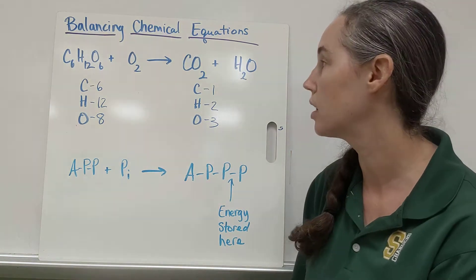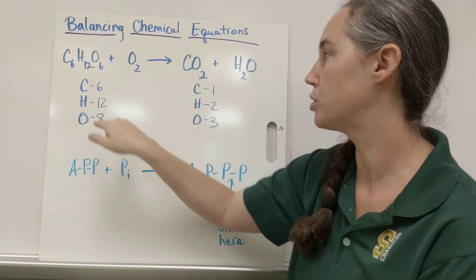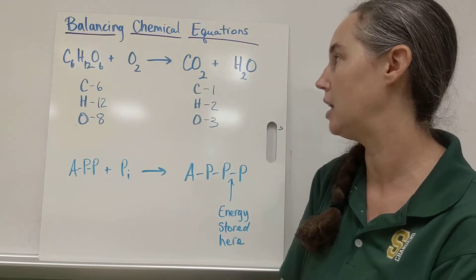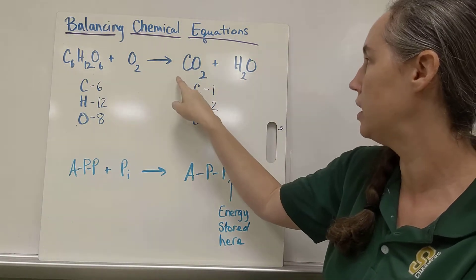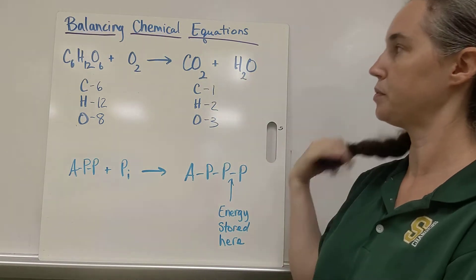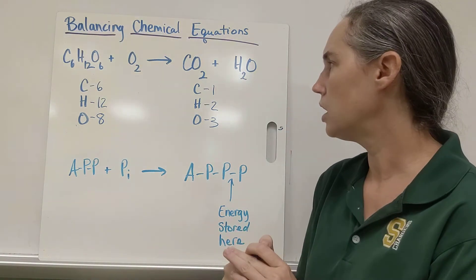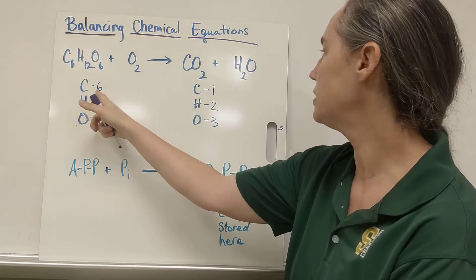So I've already kind of kicked us off by listing the elements C, H, and O on each side and counting how many we start with. On the reactant side we start with six carbons, 12 hydrogens, and in this combination eight oxygens. On the product side we've got one carbon, two hydrogens, and three oxygens.